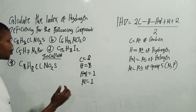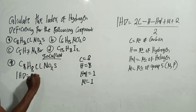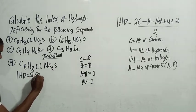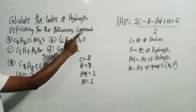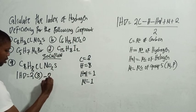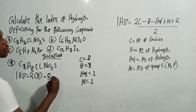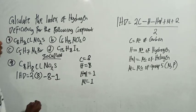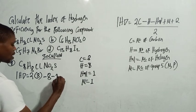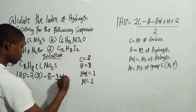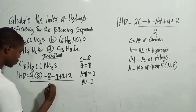Note that oxygen and sulfur are not used in IHD, so we ignore them. IHD equals 2 times C (in brackets) minus hydrogen, which is 3, minus the halogen, which is 1, plus the group five element count, which is 1, plus 2, all over 2.